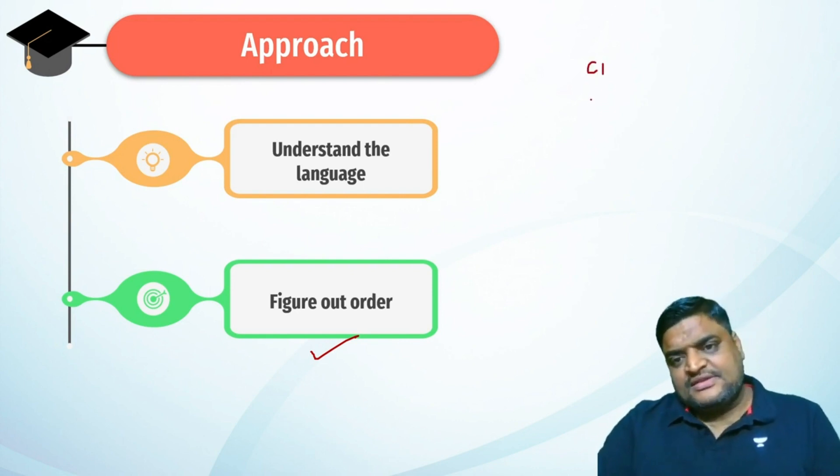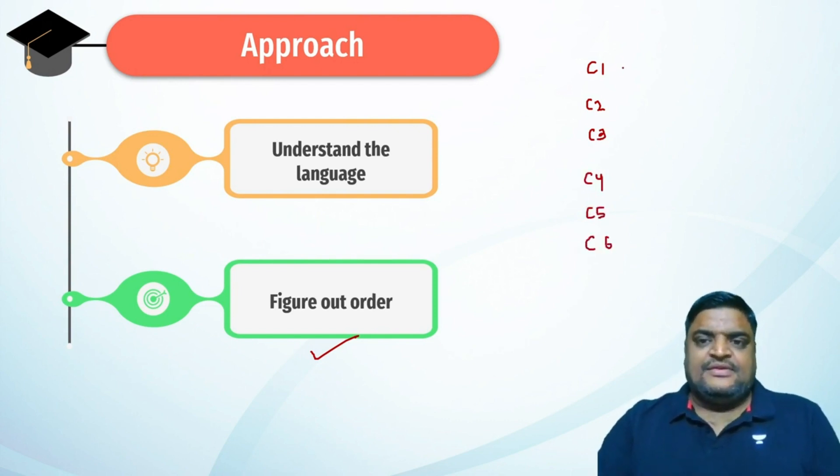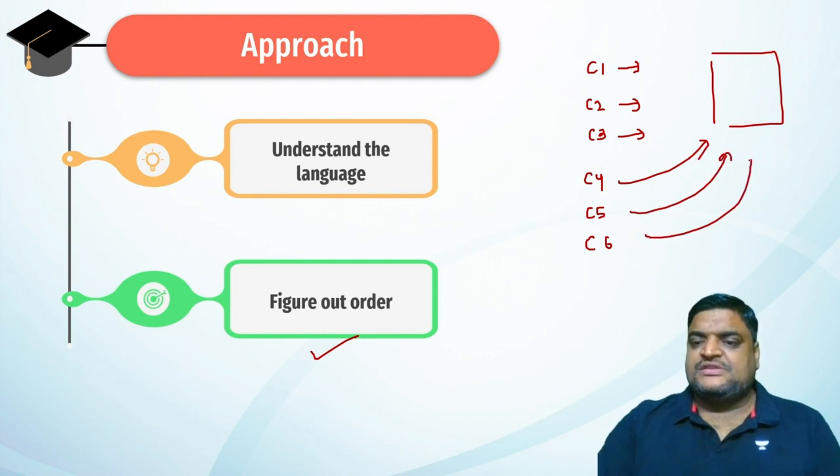There are two aspects: first understand the language and second figure out the order. LR is a game of possibilities, solved in pictures. If these clues are straightforward, use C1 followed by C2 followed by C3 - you create a picture, put in C1, C2, C3, C4, C5, and C6. This question would be very easy.